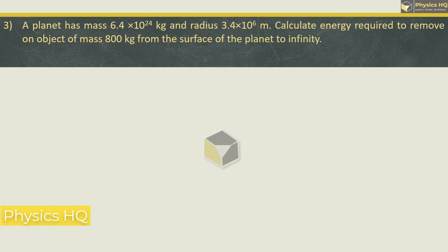A planet has mass 6.4 × 10²⁴ kg and radius 3.4 × 10⁶ meters. Calculate energy required to remove an object of mass 800 kg from the surface of the planet to infinity. Basically, they're asking for binding energy, and the binding energy formula for removing an object from the surface of the earth is given by GMm/r.